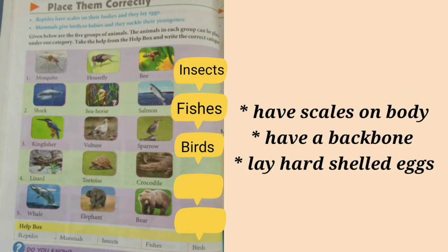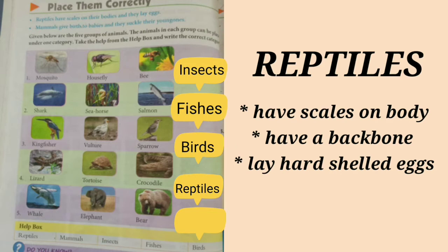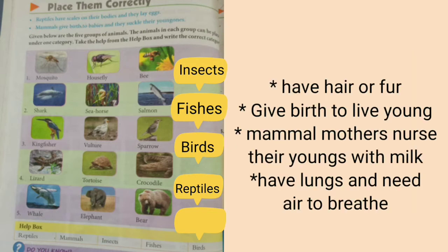In the fourth group of animals, there is lizard, tortoise and crocodile. These animals have scales on their body, have a backbone and lay hard-shelled eggs. These are reptiles.